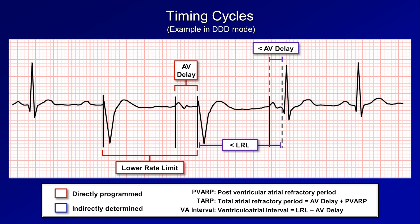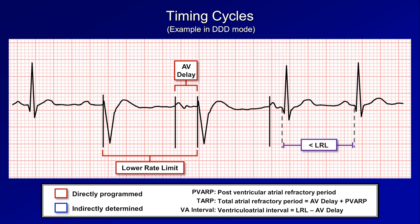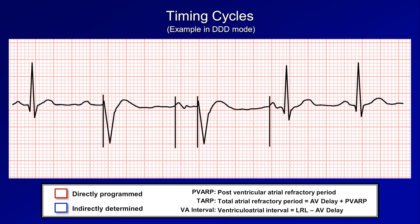With this final A-sensed V-sensed beat, it's the combination of both an intrinsic P wave and intrinsic AV conduction that leads to the shorter interval between ventricular depolarizations. With modern pacemakers and newer algorithms, timing cycles can be much more complex than this, but this is the basic idea of how settings impact the timing of cardiac events.